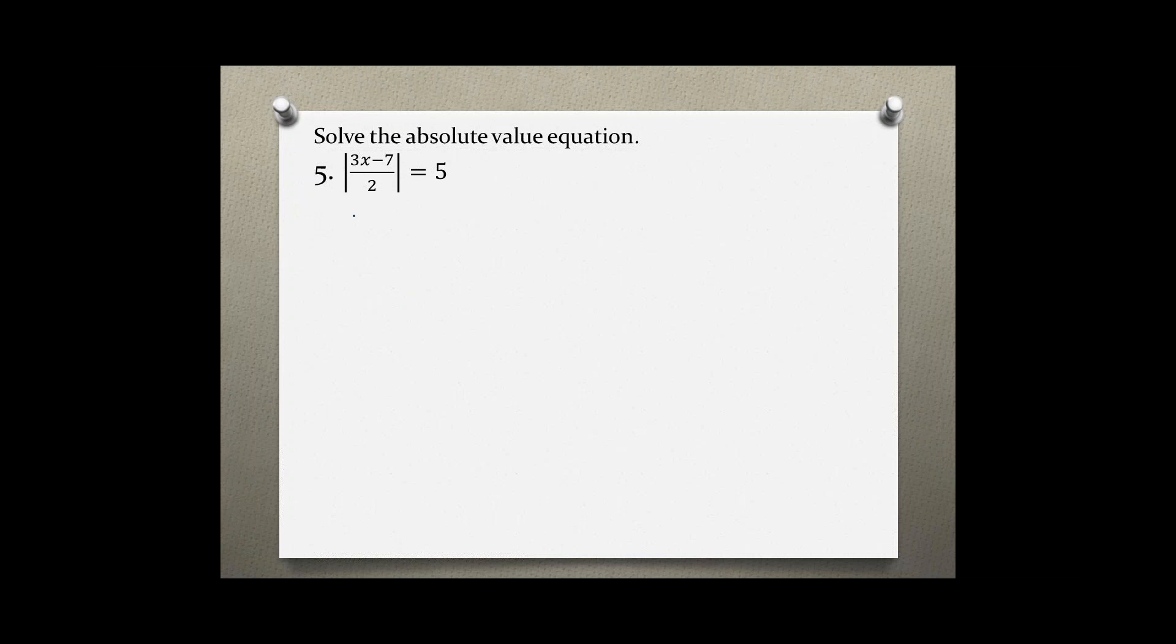So we're getting two different versions of this absolute value equation. 3x minus 7 over 2 is equal to negative 5, and also the positive version, which is 3x minus 7 over 2 is equal to positive 5.